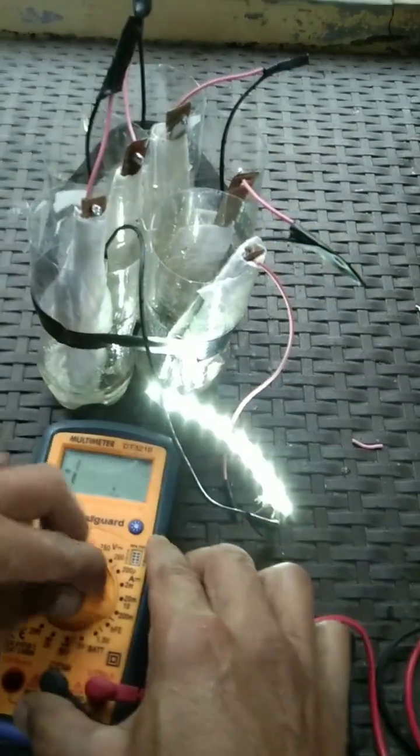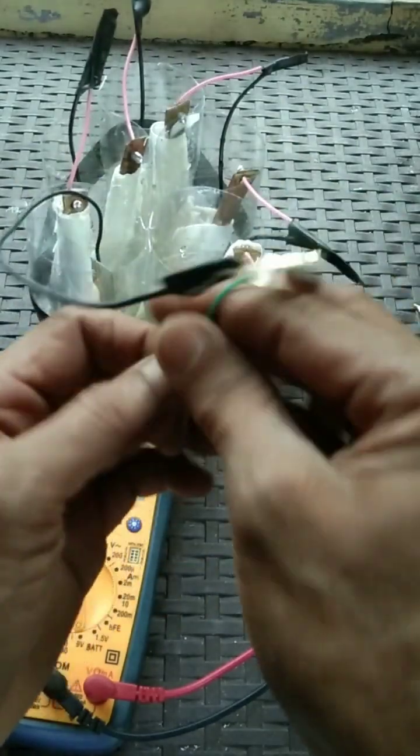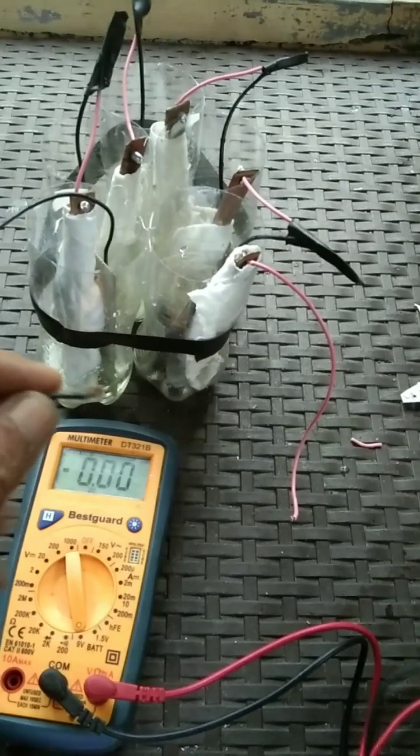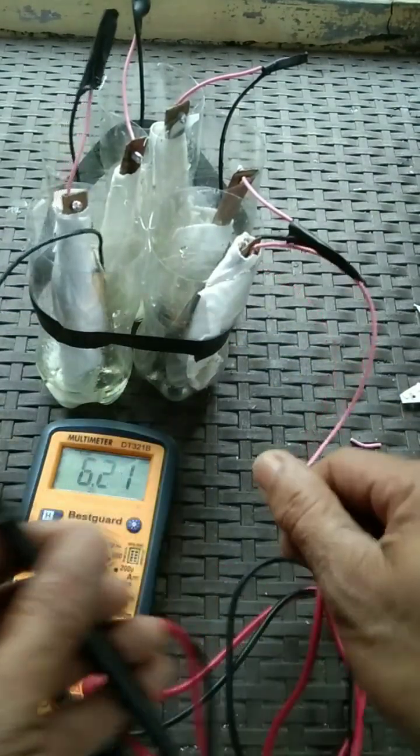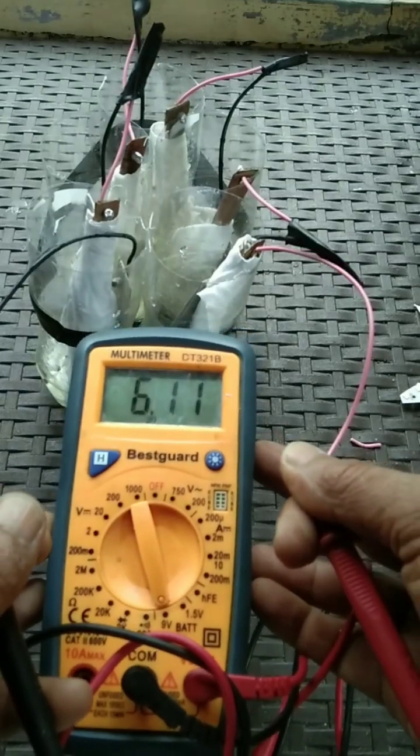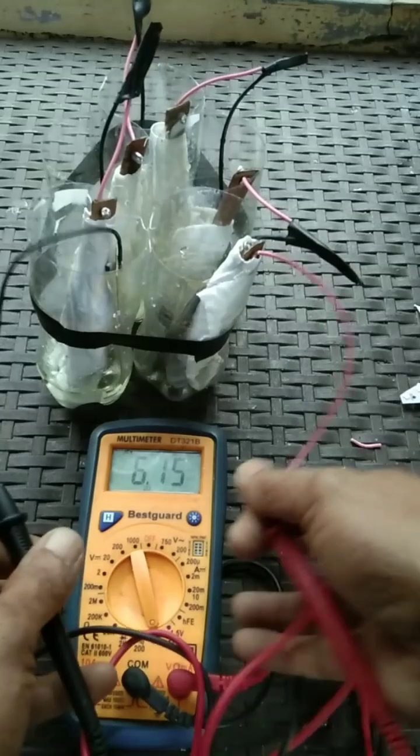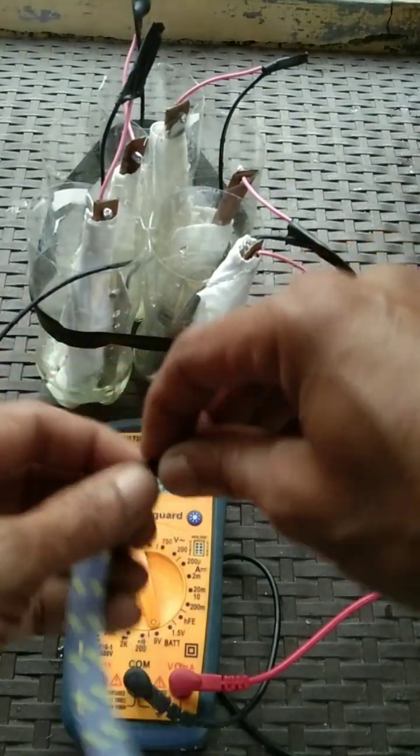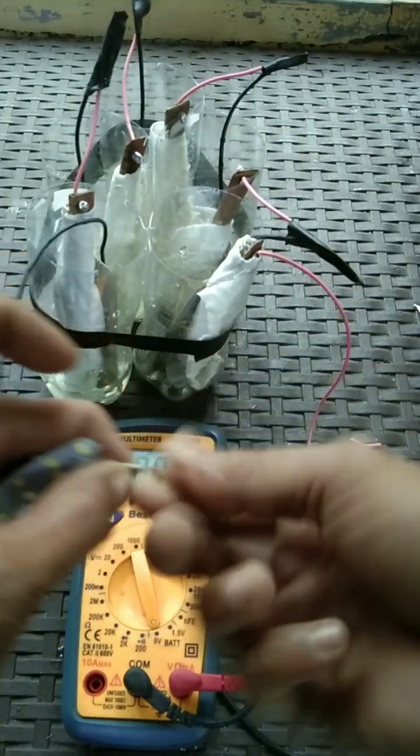Now we're going to check the voltage output. And let's see how many volts this homemade battery generates. And we got 6.12 volts, 6.14. Well that is a good sign.